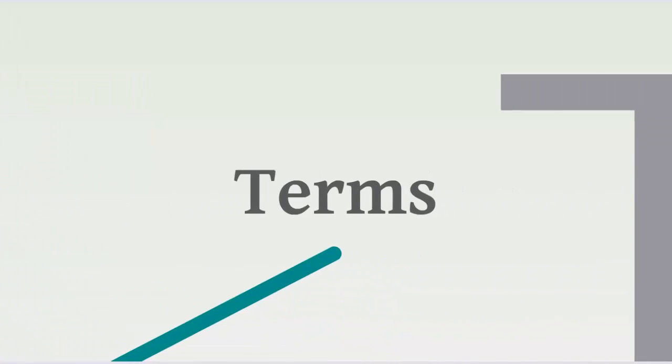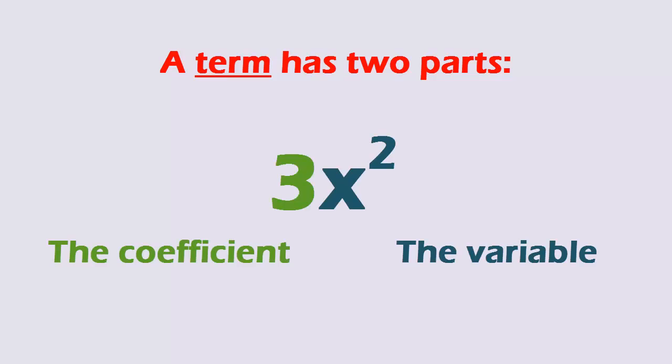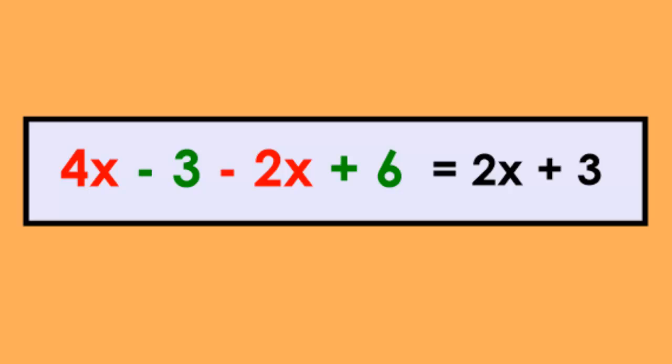We'll move on to terms. A term has two parts, a coefficient and a variable, which may or may not have an exponent. When adding and subtracting, we collect the like terms.